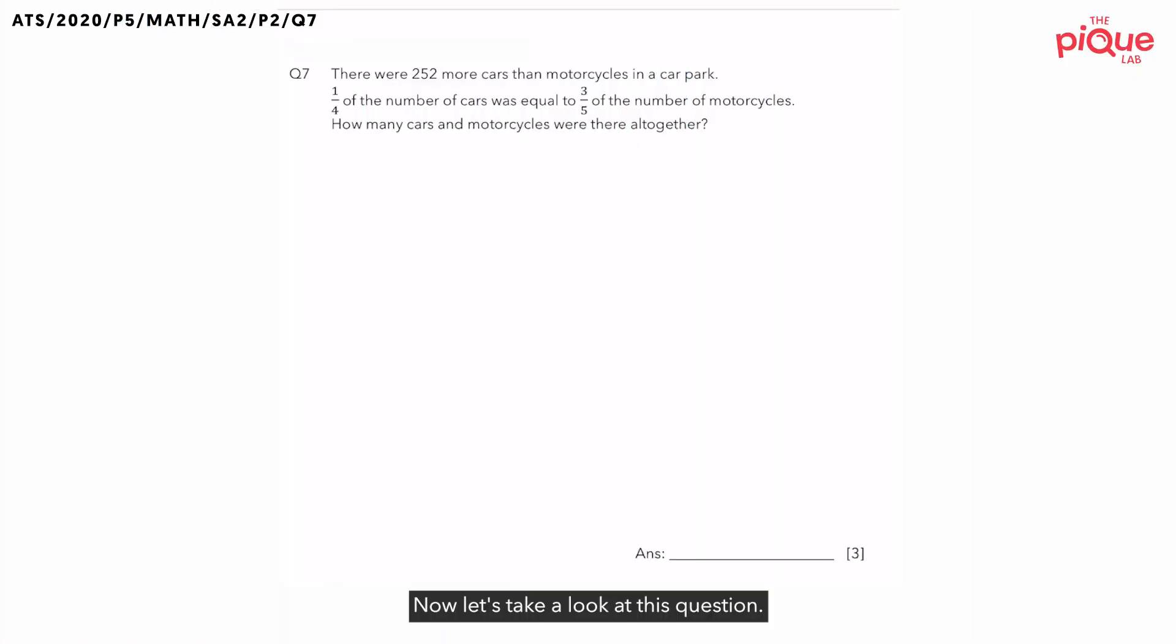Now, let's take a look at this question. There were 252 more cars than motorcycles in a car park. Let's identify our keywords here. Do you think that car park is a keyword here? Of course not, right? Now, car park is just a location for cars and motorcycles, which are all vehicles, to park in. Okay, it doesn't mean that this is a keyword.